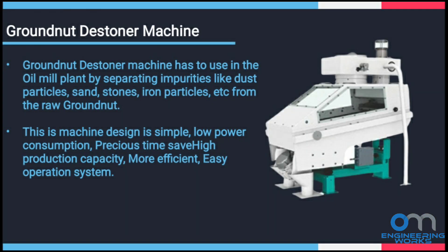Groundnut destoner machine is used in the oil mill plant for separating impurities like dust particles, sand, stones, and iron particles from the raw groundnut. The machine design is simple.